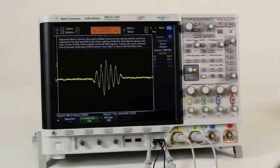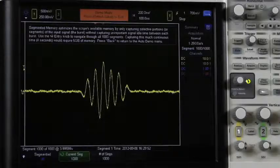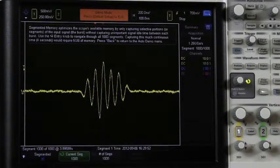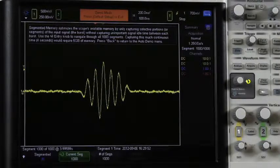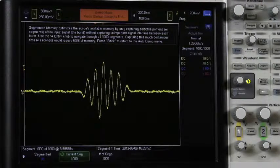If a scope without segmented memory was to acquire this same signal continuously for 4 seconds, it would require 5GB of memory, which no scope in the world has. Segmented memory is a standard capability of the 4000X series, providing customers an effective, ultra deep memory scope capture tool.